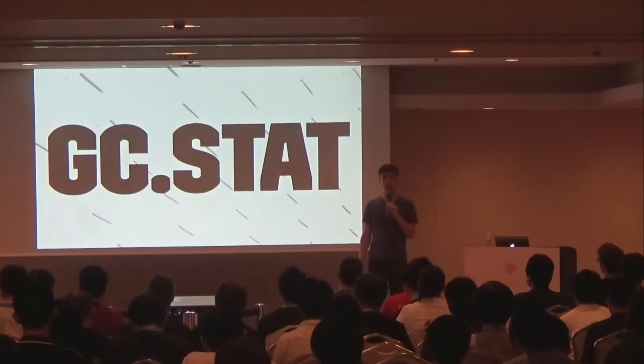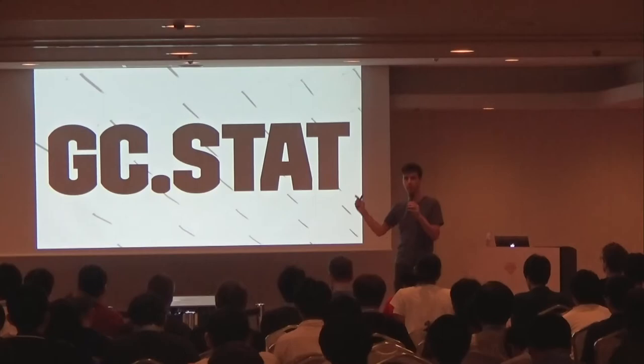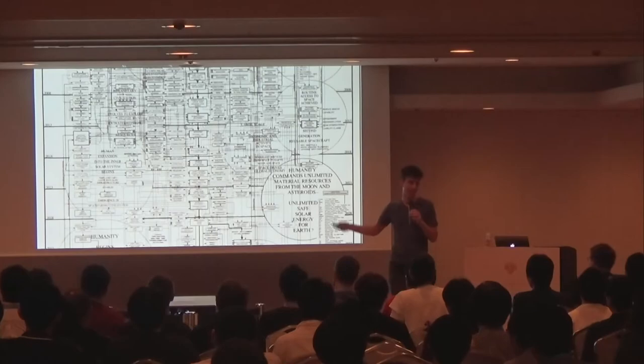Another way we can measure how much fragmentation we are experiencing is by inspecting GC.stat, which is available in any Ruby session. It's a hash that contains statistics about GC and the current state of memory. To talk about what GC.stat actually means, I'm going to have to explain GC internals in 60 seconds.